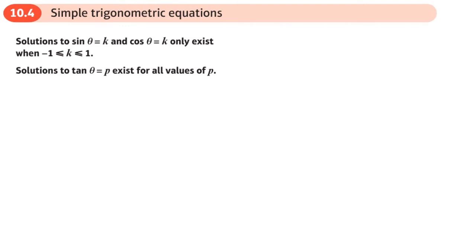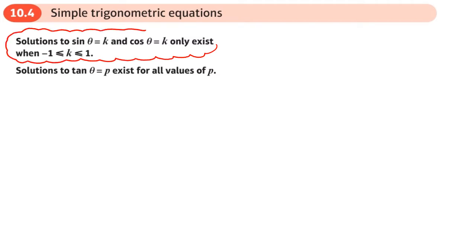This is the full section of the trig identities and equations chapter. Here we're going to be looking at solving simple trig equations. When you solve these simple equations, when it's sine or cosine, the value can only ever be between one and negative one.